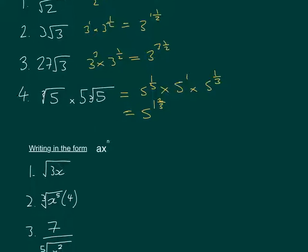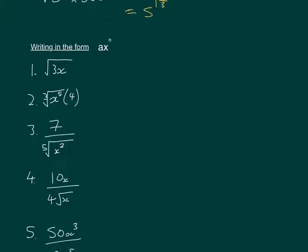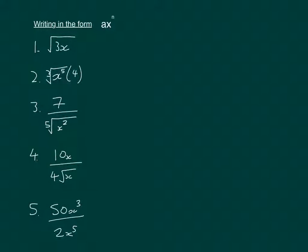Let's move on to the last type, where we're writing in the form ax^n. Very similar to the first type actually, but these examples are slightly more complicated. We have root 3x, so that's just going to be 3x, and it's all to the power of a half.